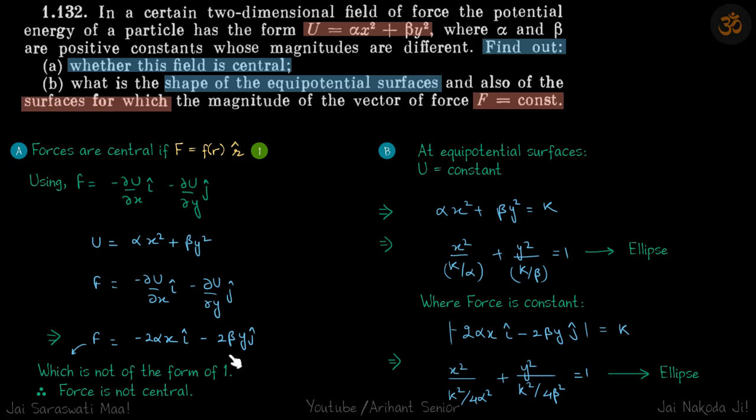Hence, this is not a central force. Now, for equipotential surfaces, U is constant. We'll put this U as constant, let's say it is K. If we take K to this side, we get this equation, which is of the ellipse. So for this kind of potential energy field, the equipotential surfaces are of the form of an ellipse.